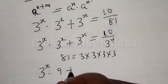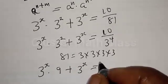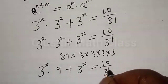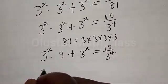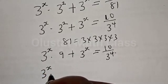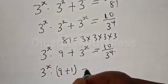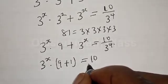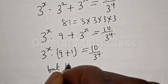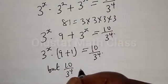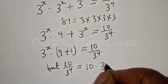Then 3 to the power x is common. We have 3 to the power x multiplied by (9 plus 1) equal to 10 divided by 3 to the power 4. Now, 10 divided by 3 to the power 4 is the same thing as 10 multiplied by 3 to the power minus 4. Therefore our equation becomes 3 to the power x multiplied by 10 equal to 10 multiplied by 3 to the power minus 4.